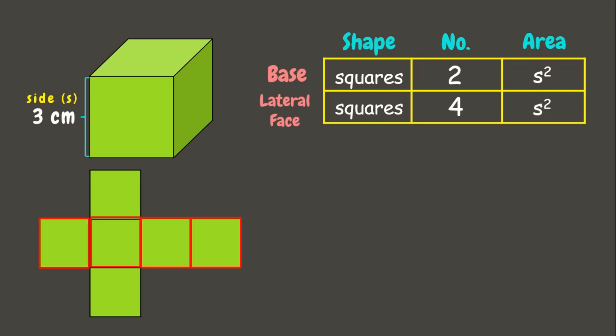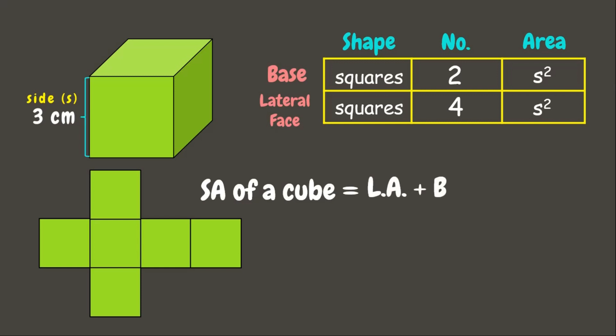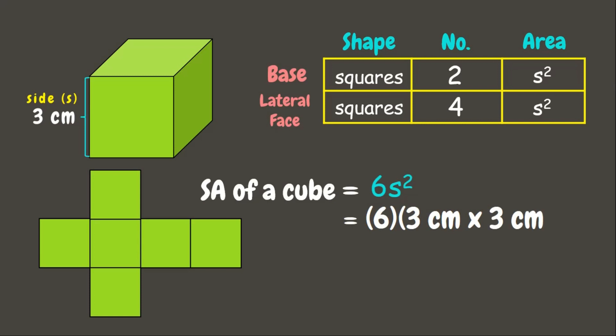Now let us solve for its surface area. To solve for the surface area of a cube, we simply add the areas of the lateral faces plus the areas of the bases. Here we can see that we have six squares, and the formula for the area of each square is side times side, or s squared. So that would be 6 × s², and that is the formula for the surface area of a cube.